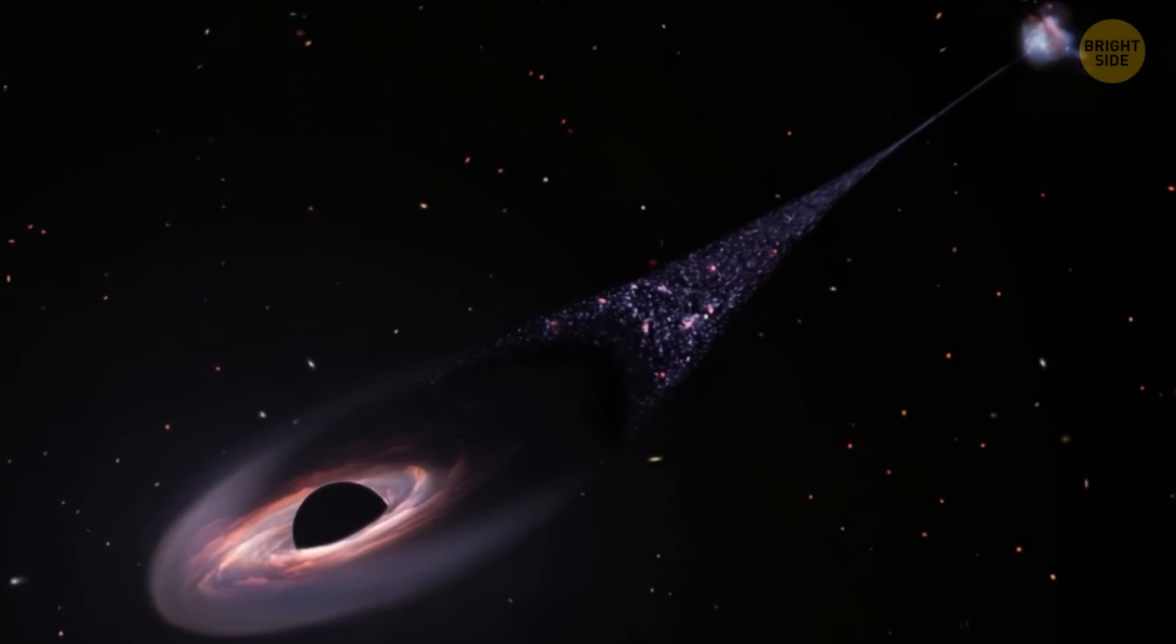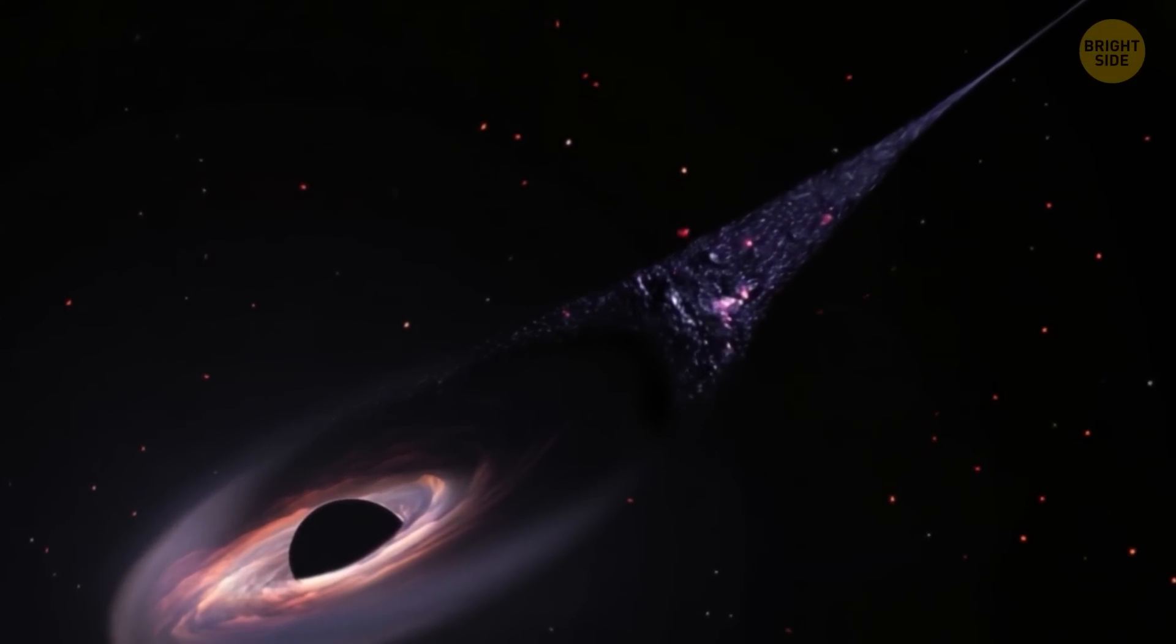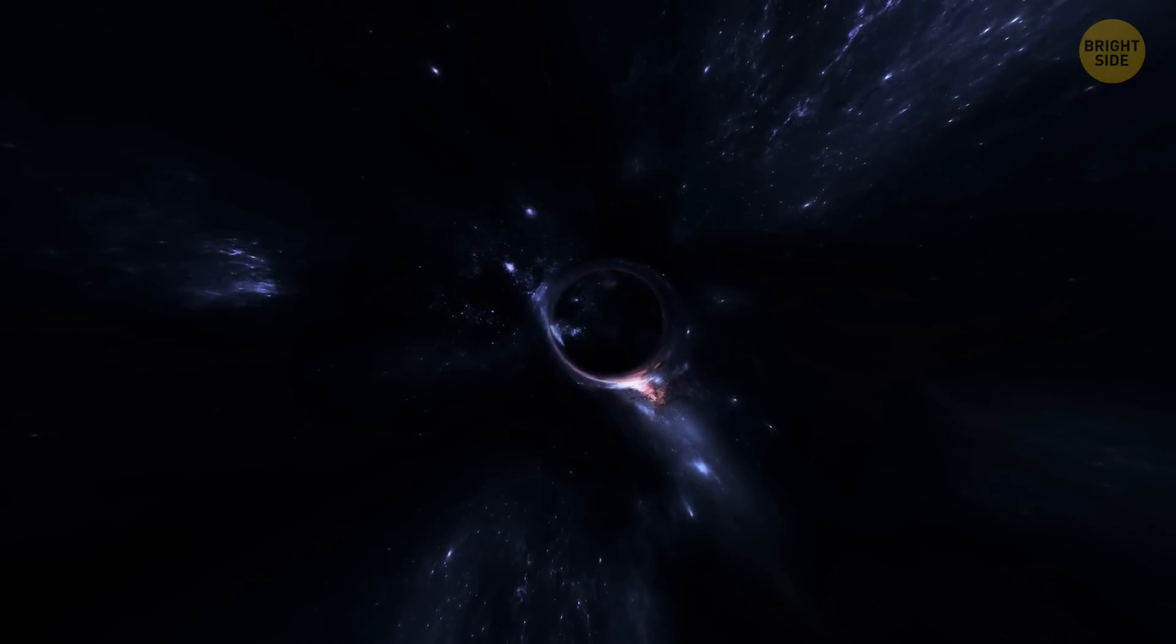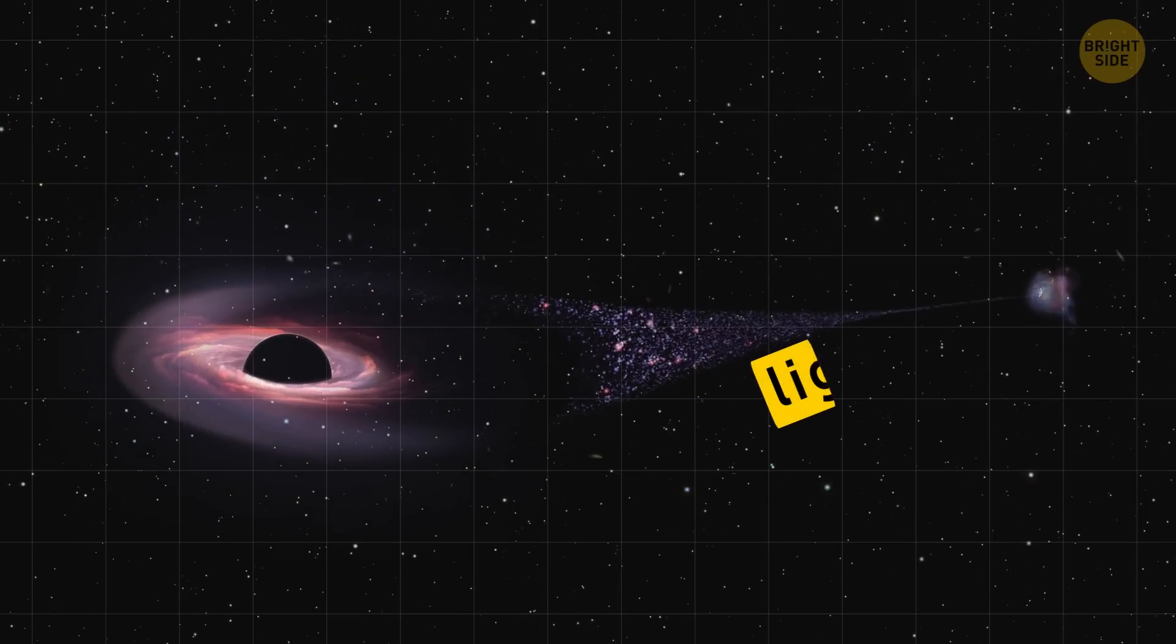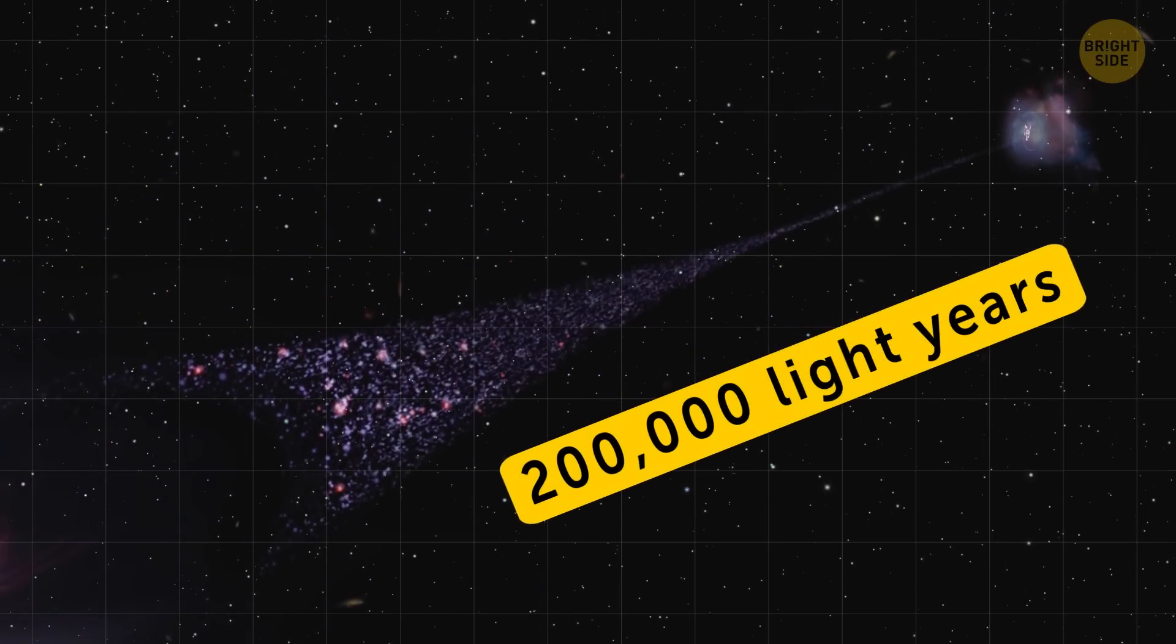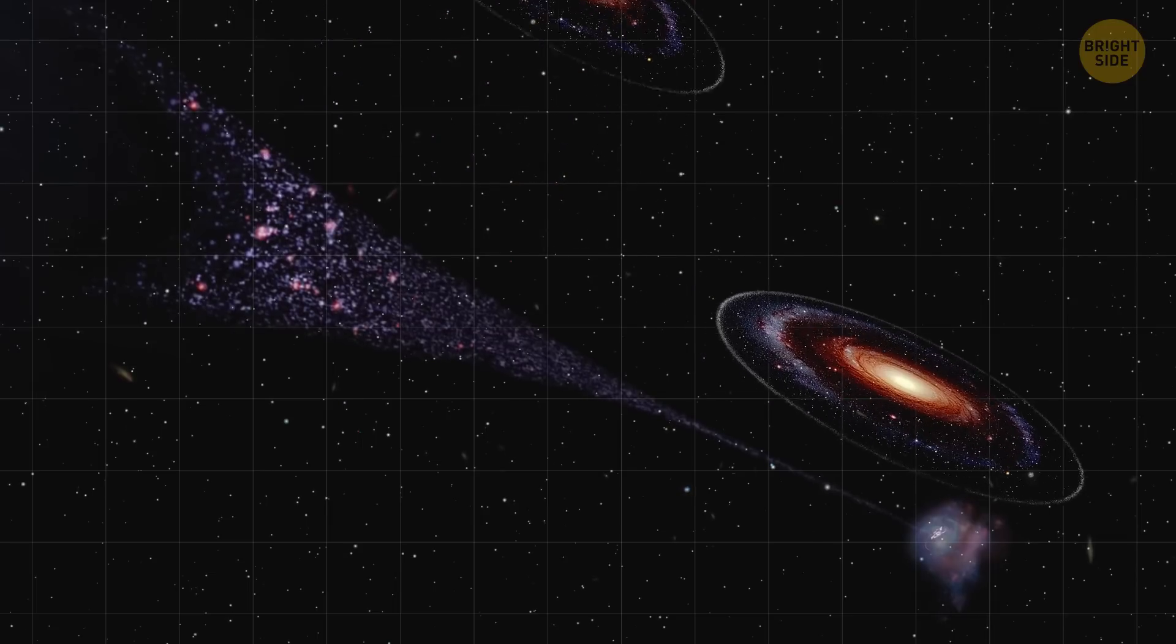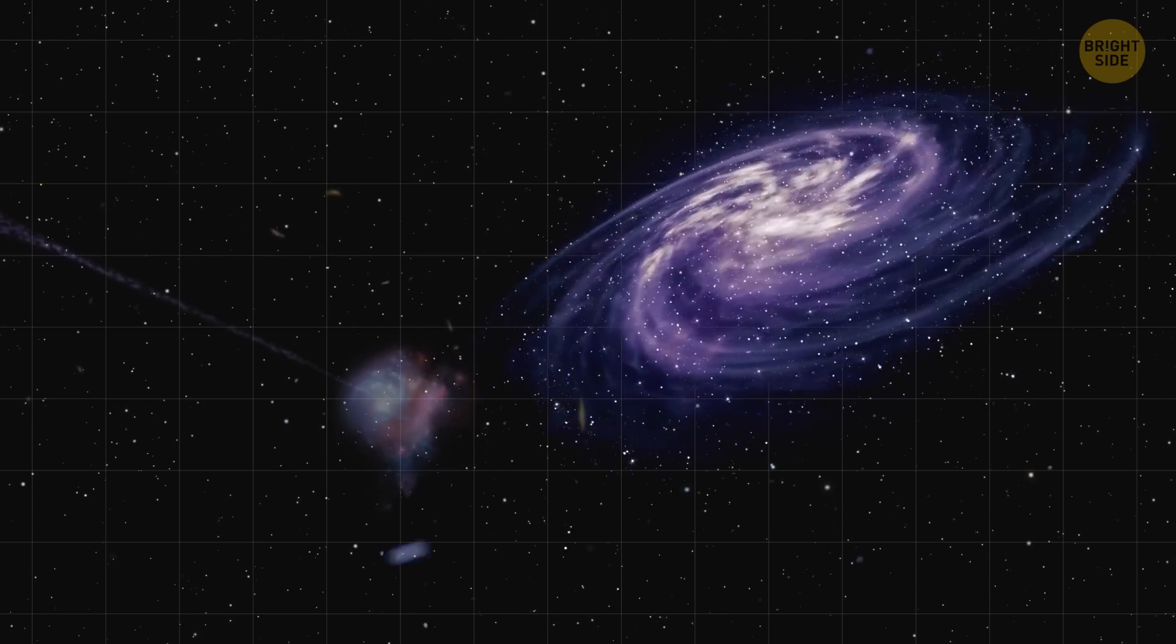As it moves, it compresses the gas on its path, literally creating new stars along its journey. So it's leaving a beautiful long trail of stars behind it. And when I say long, I mean it. Its tail is 200,000 light-years long, which is like the length of two Milky Ways. Turns out, one end of this star trail connects to a distant small galaxy. This is probably where the black hole came from.